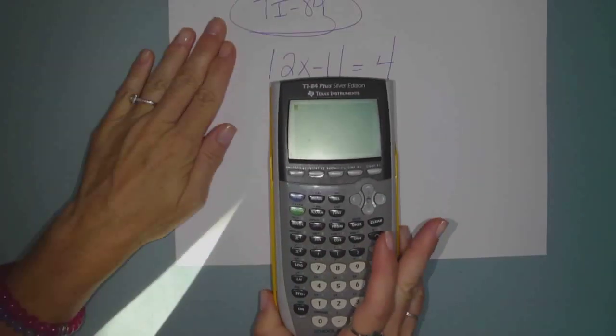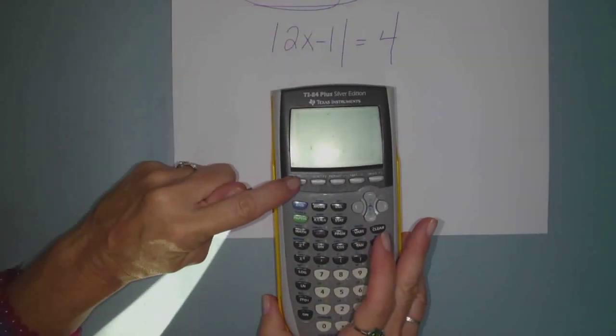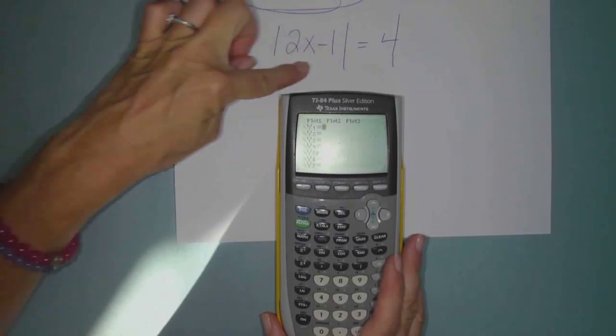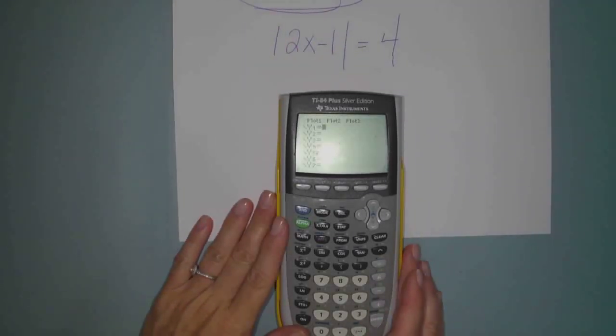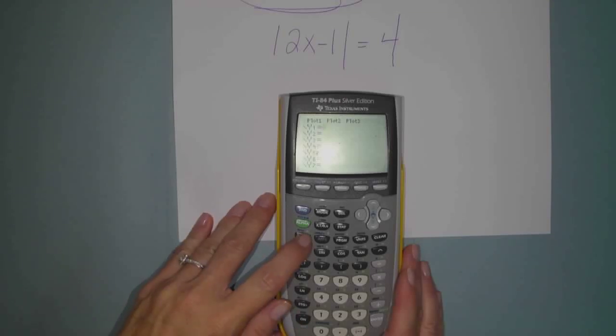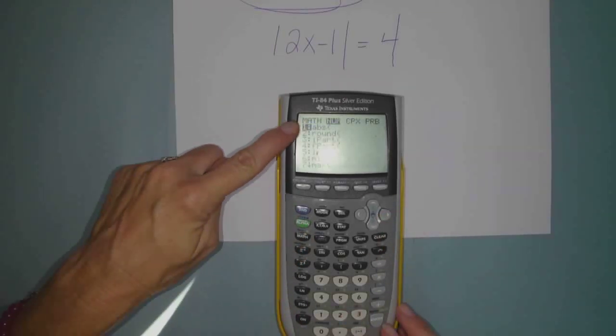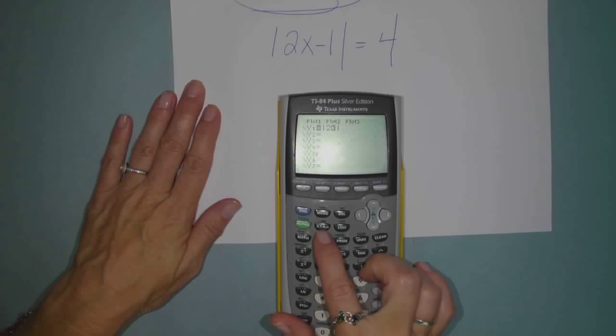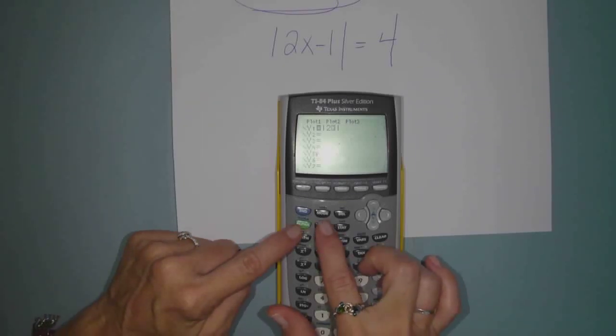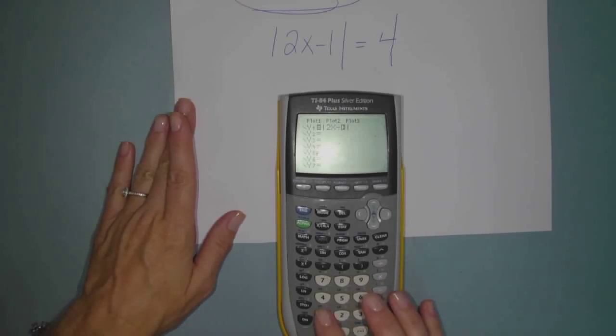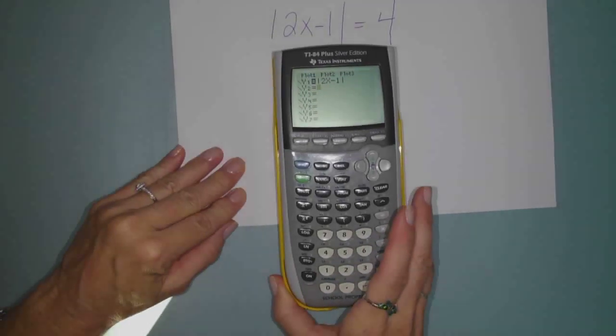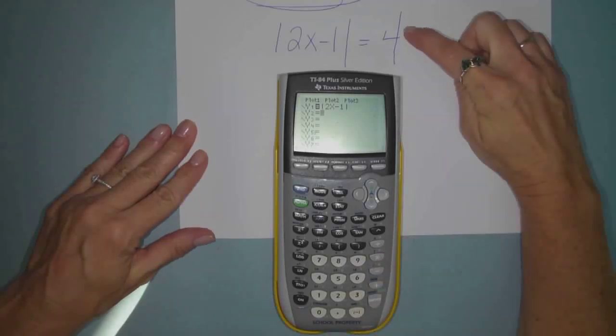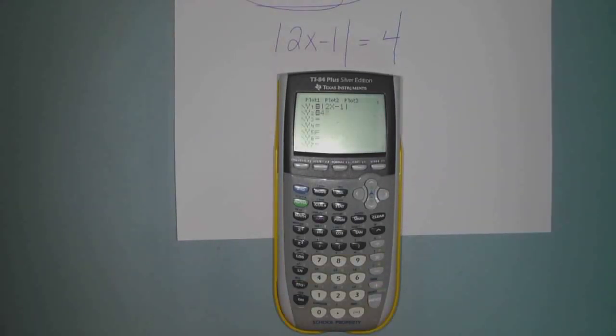So what you have to do is start. We'll turn it on, of course. And then I want you to hit y equals right here, y equals. Now in y1, we're going to put the left side of the equation. So we have to get those absolute value bars. We've done this before. We press math, num, 1, abs. Okay, so inside we're going to type 2. And then my x sits right here next to the green button, x. So press him down, minus 1. And hit enter to store it. So there's the absolute value of 2x minus 1. Now in y2, we're going to type the right side of the equation, 4.